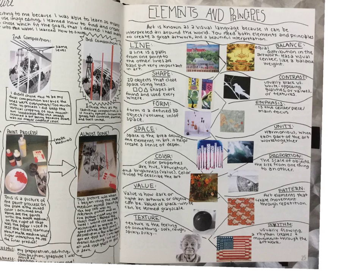Page 25 covers elements and principles. I added a small intro on the page including the definition and what was important. I had keywords: line with a picture, shape with a picture, form with a picture, space, color, value, and texture.